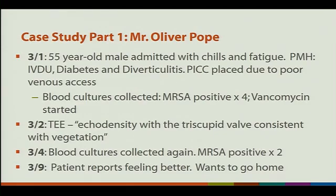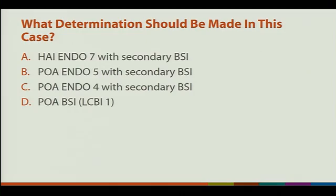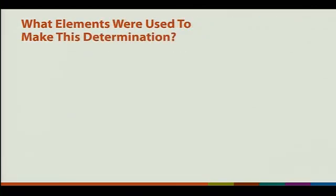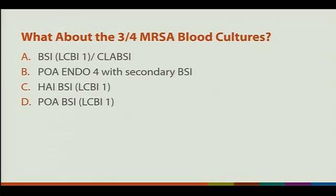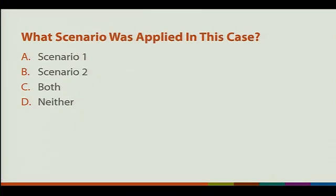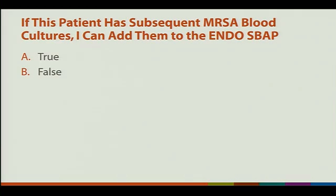On 3-4, he has blood cultures collected again and they are positive for MRSA times two. On 3-9, he feels better and he wants to go home. The four questions to answer are: what determination should be made in this case, what elements were used to make this determination, what about the 3-4 MRSA blood cultures, what scenario of secondary BSI attribution was applied, and whether subsequent MRSA blood cultures can be added to this endo SBAP.